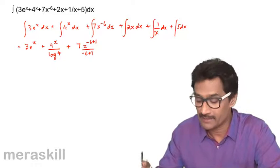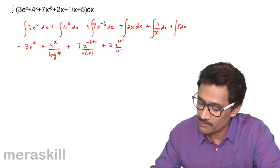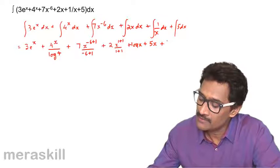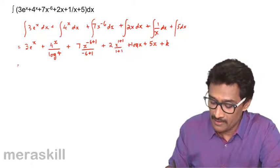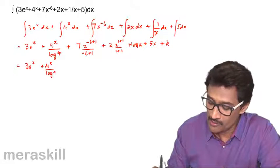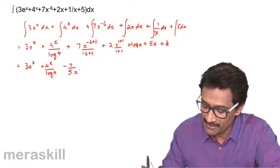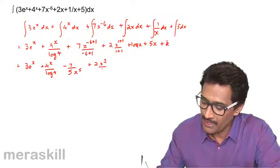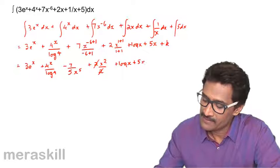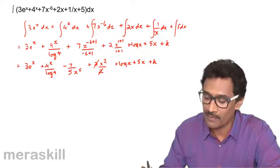Continuing: x raised to n plus 1 upon n plus 1, plus 2x raised to 1 plus 1 upon 1 plus 1, plus log x, plus 5x, plus the summative constant k. The final result is 3eˣ plus 4ˣ upon log 4, minus 7 by 5 x raised to minus 5 which is 1 over x⁵, plus 2x squared upon 2, plus log x, plus 5x, plus k.